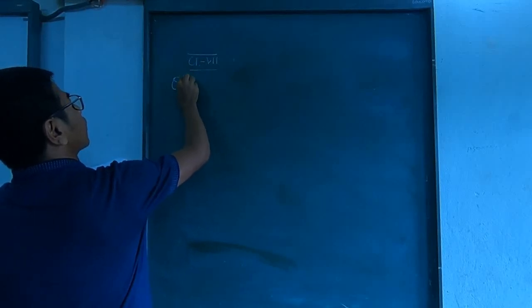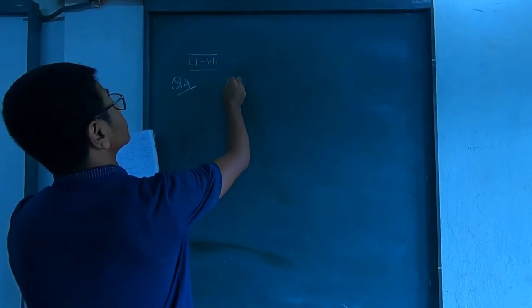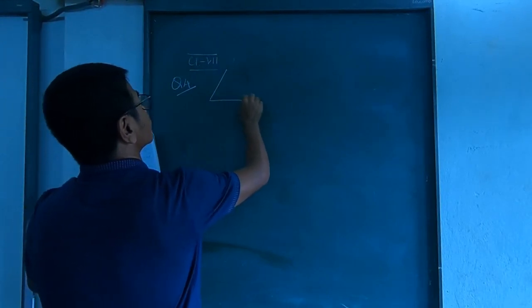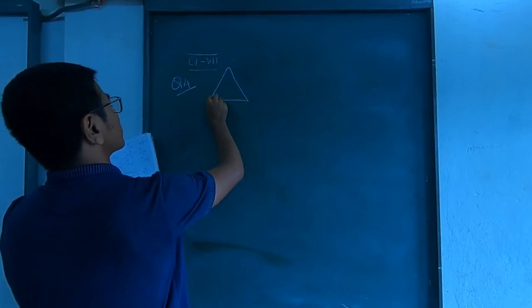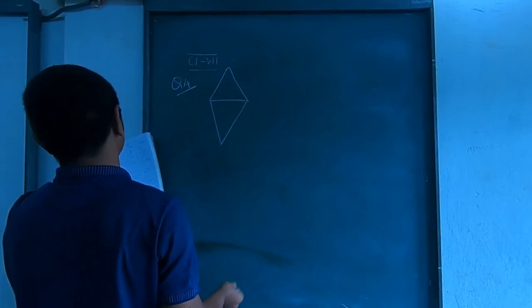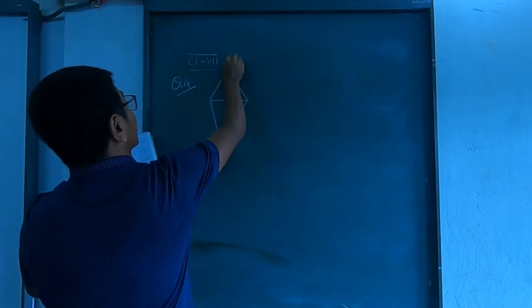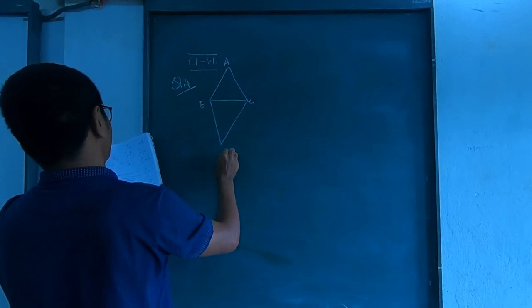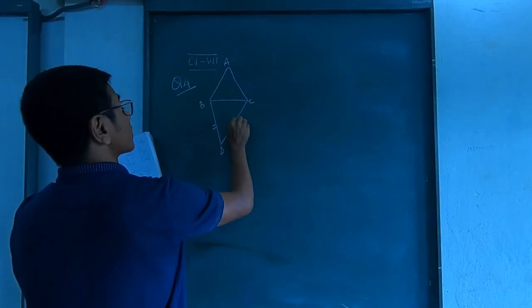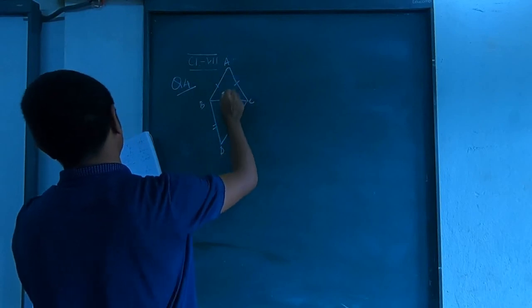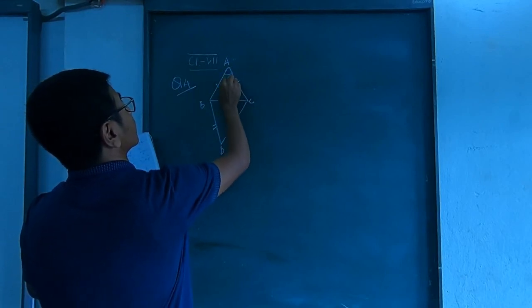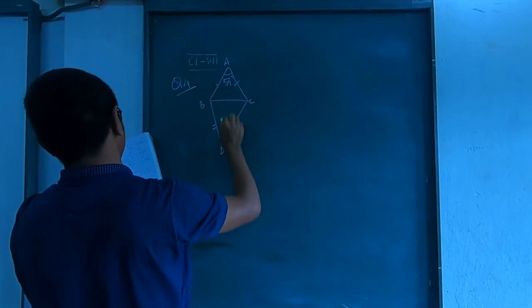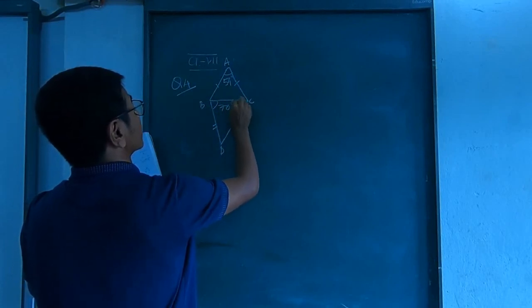Question 4. Let's draw A, B, C, and D. This is isosceles. This is isosceles. This angle is 54 degrees and this is 70 degrees.